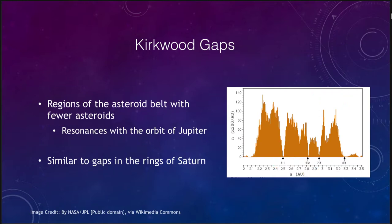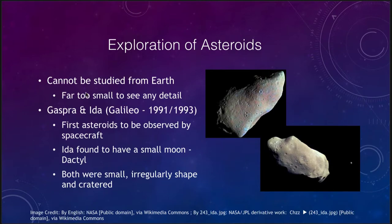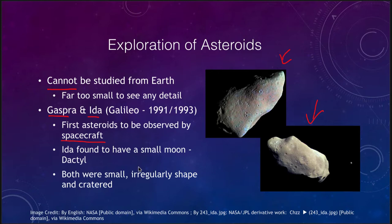How can we explore these asteroids and what do we see? They cannot be studied from the Earth — they are far too small to see any detail. We can detect them and see their reflected light, but we can't study them in detail. Two of those that were explored were Gaspra and Ida, some of the earliest asteroids explored. They look just like small rocks with lots of little craters on them, and they were the first asteroids to be observed by a spacecraft — the Galileo spacecraft, flying on its way to Jupiter, passed by these asteroids to give us our first close-up images.